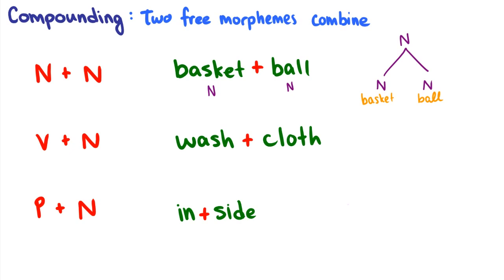Same thing with washcloth. So here you have wash is a verb, cloth is a noun, and then this becomes the noun washcloth. So here you can have a verb and a noun becoming a noun.